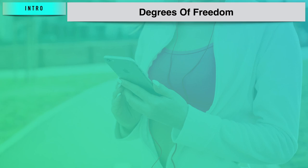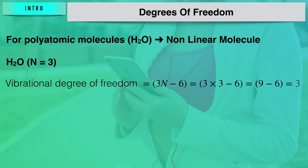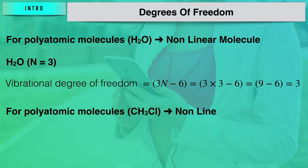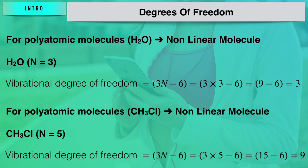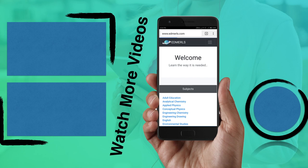For the non-linear polyatomic molecule water, n equals 3, so the vibrational degrees of freedom are 3 times 3 minus 6, leaving 3 vibrational degrees of freedom. For methyl chloride, n equals 5, so 3 times 5 minus 6 gives 9 vibrational degrees of freedom. These vibrational degrees of freedom represent the number of independent normal modes of vibration a molecule can show.